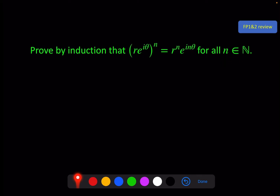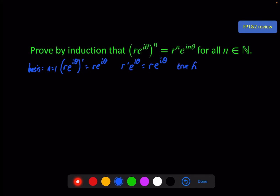Remember that a proof by induction has its limitations. This is a review from FP1 with some FP2 content. For the basis step, we check that it works for n equals 1. On the left hand side we get Re^(iθ) to the power of 1, which is obviously Re^(iθ). On the right hand side we get R^1 e^(i·1·θ), which is Re^(iθ). That is clearly the same thing — true for n equals 1.